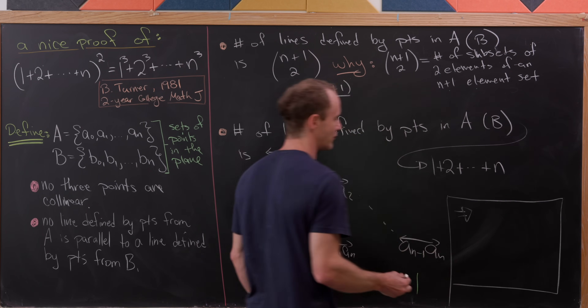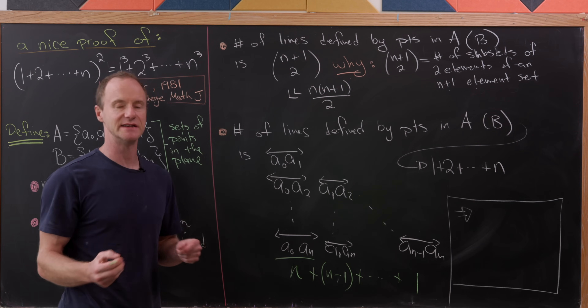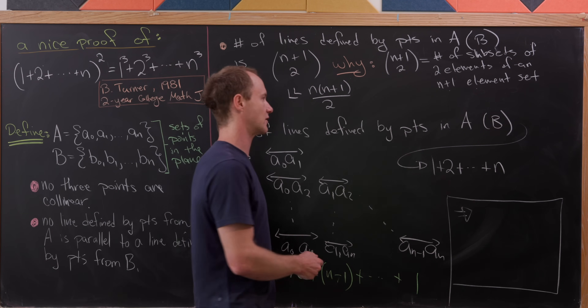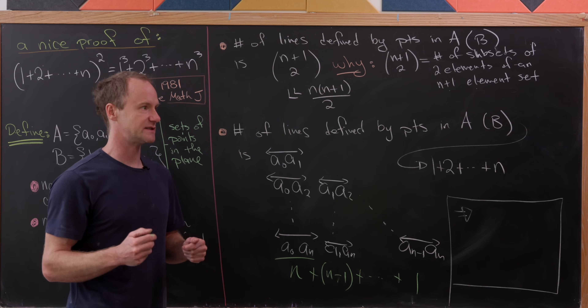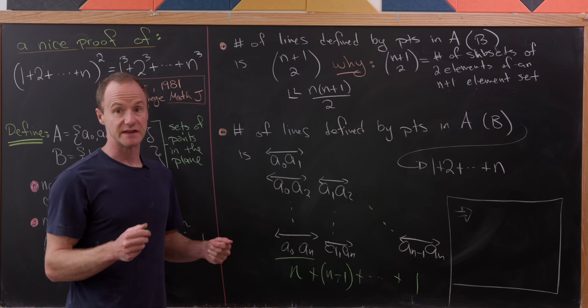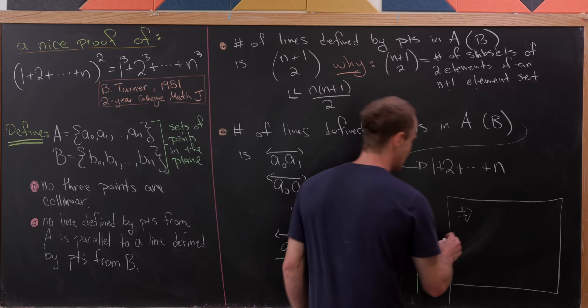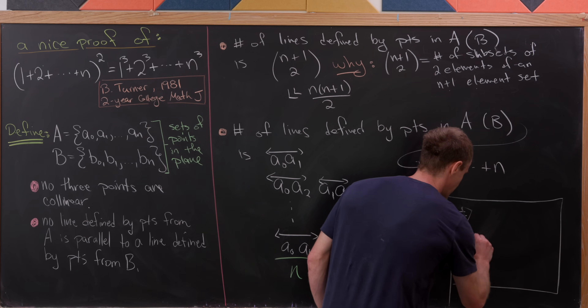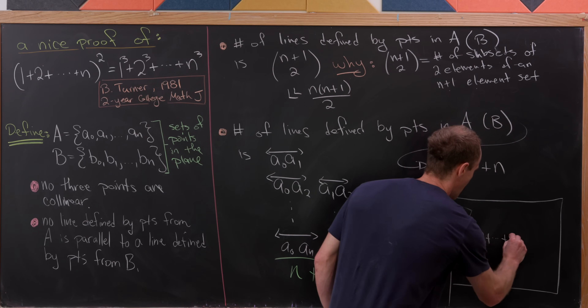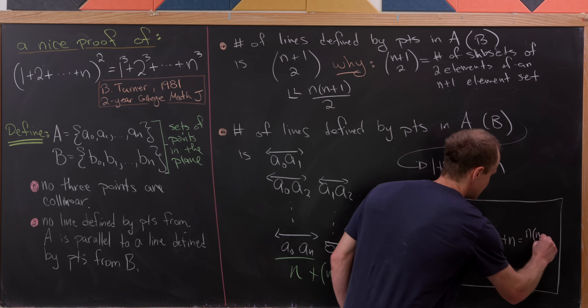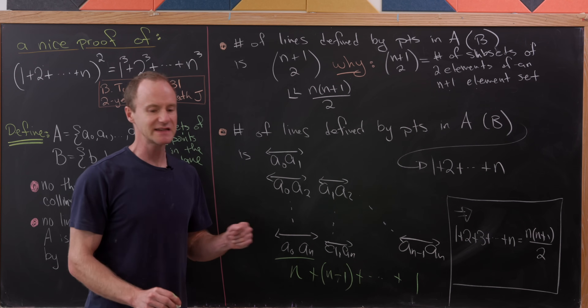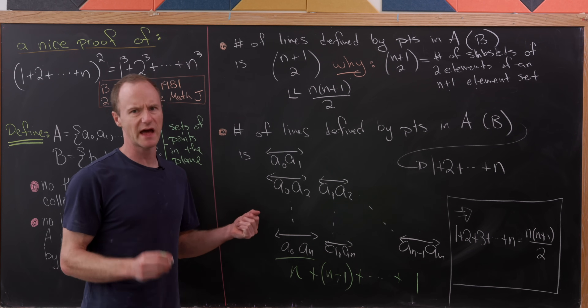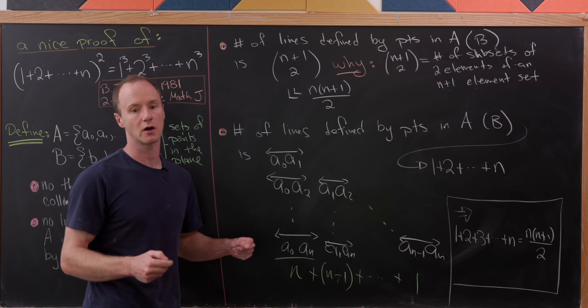By counting the number of lines defined by these sets two different ways, we've derived the classic identity for the nth triangular number: one plus two plus three all the way up to n equals n times n plus one over two. That's not our final goal, but it's a tool we'll need along the way.